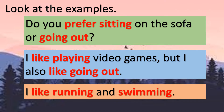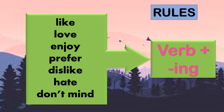We are going to learn why we have the -ing here. Look at the words in front: prefer sitting, prefer going out, like playing, like going out, like running, and swimming. From the examples, we can say that after the words like, love, enjoy, prefer, dislike, hate, and don't mind, the verb that comes after must have -ing. You have to remember this rule.